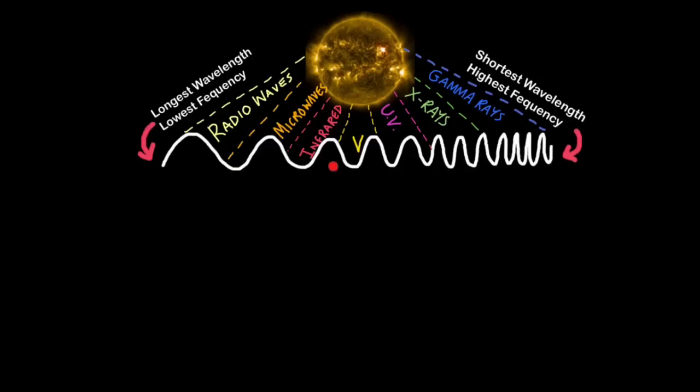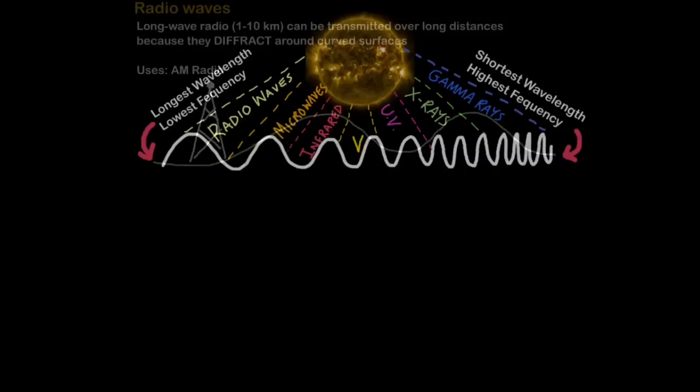Just like visible light which has red, orange, yellow, green, blue, indigo, violet. All these different colours of light have their own frequency. So let's get right to it.